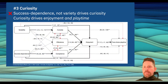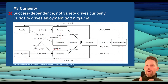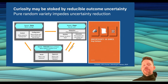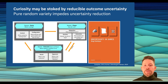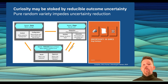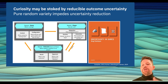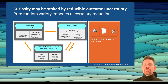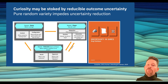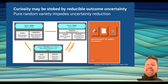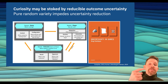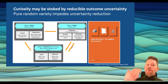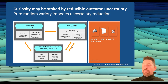Third, in terms of curiosity, again surprisingly, we found that variability did not impact curiosity — but success dependence did. Why could that be? Previous work on what stokes curiosity in games points to uncertainty. Kumari and colleagues suggested one such uncertainty is outcome uncertainty: what is the result of my action? Curiosity may be stoked by reducible outcome uncertainty — the ability, over time, to get better at predicting outcomes even when some uncertainty remains. Purely random variety in animations may impede this learning process of slowly reducing uncertainty and better predicting what happens next.